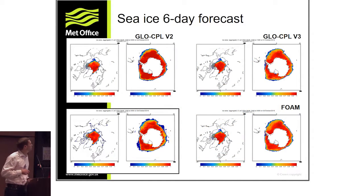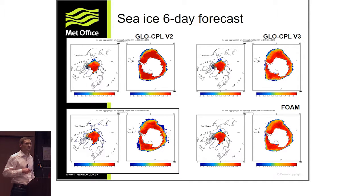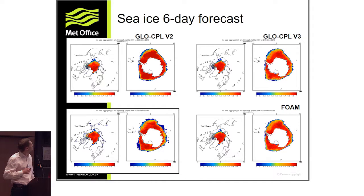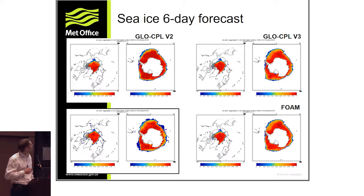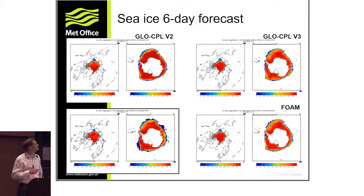These are very early results from the system that's been running for a few weeks in preparation for V4 next year. They illustrate cases where the old system had problems with initialization due to adjustments between two slightly inconsistent systems. This is a 'spot the odd one out' exercise: we have a six-day sea ice forecast from the V2 system, the V3 system on the right, the ocean FOAM analysis at that day as essentially truth — since it assimilates sea ice concentration — and a FOAM forecast for comparison. The old system shows quite increased ice growth during the forecast compared to the others.